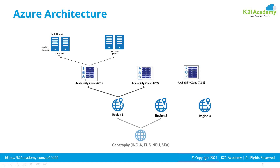Multiple availability zones make a region. Similarly, multiple regions make a geography, which means within India, for example, there are multiple regions such as South India and West India. US has multiple regions and Europe has multiple regions as well.